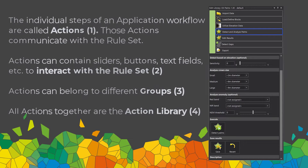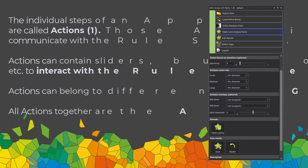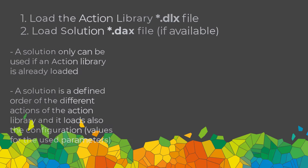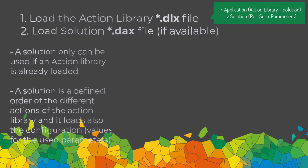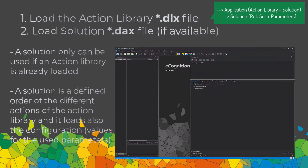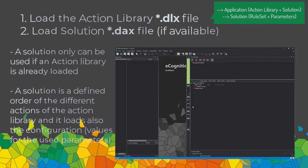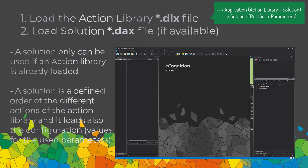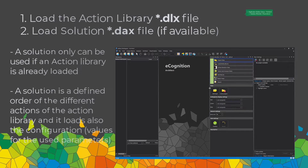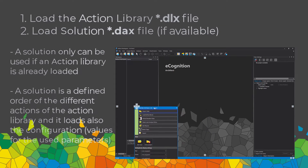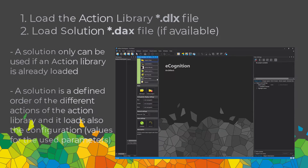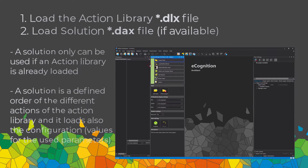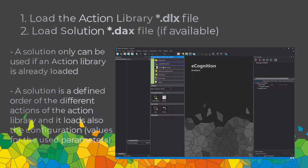The workflow is: if someone has provided you with an application, you load the action library, then you load a solution. If the solution file — the .dax file — is already in the same directory as the action library .dlx file, it will open the solution automatically. The solution is simply a definition of the order of actions defined in the action library, and also includes the rule set. In the action library you could have 10 different actions, and the solution simply defines their order.